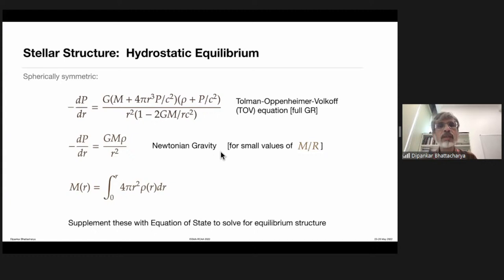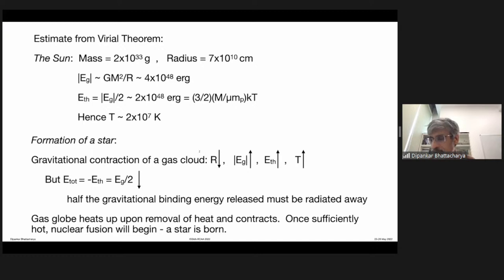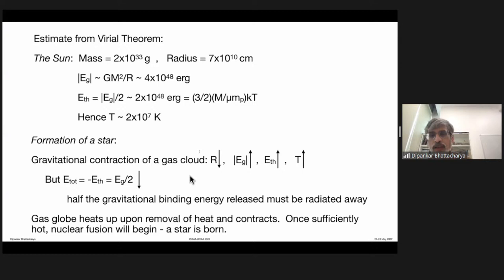We covered this yesterday, and from that we derived the Virial theorem. We used it to estimate the central temperature of the Sun and to describe what happens when a gas cloud contracts: in gravitational contraction, the cloud heats up, and eventually the central temperature reaches a high enough value to ignite hydrogen fusion.